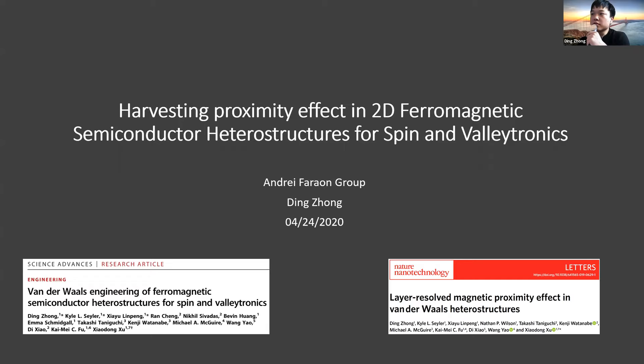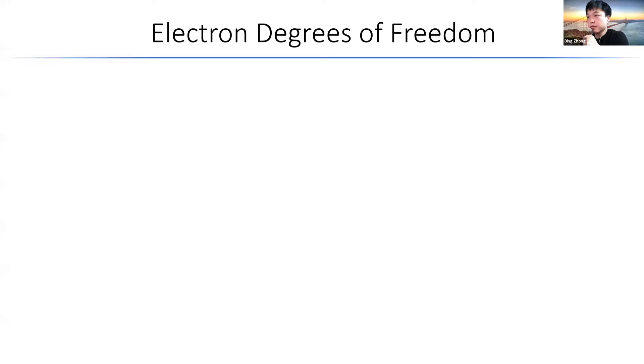The topic I'm covering today is harvesting proximity effect into the ferromagnetic semiconductor heterostructure for spin and valleytronics. In this storyline, there are two publications: one is in 2017, which is the Science Advances paper at the lower left, and the other is the Nature Nano, which was published February this year.